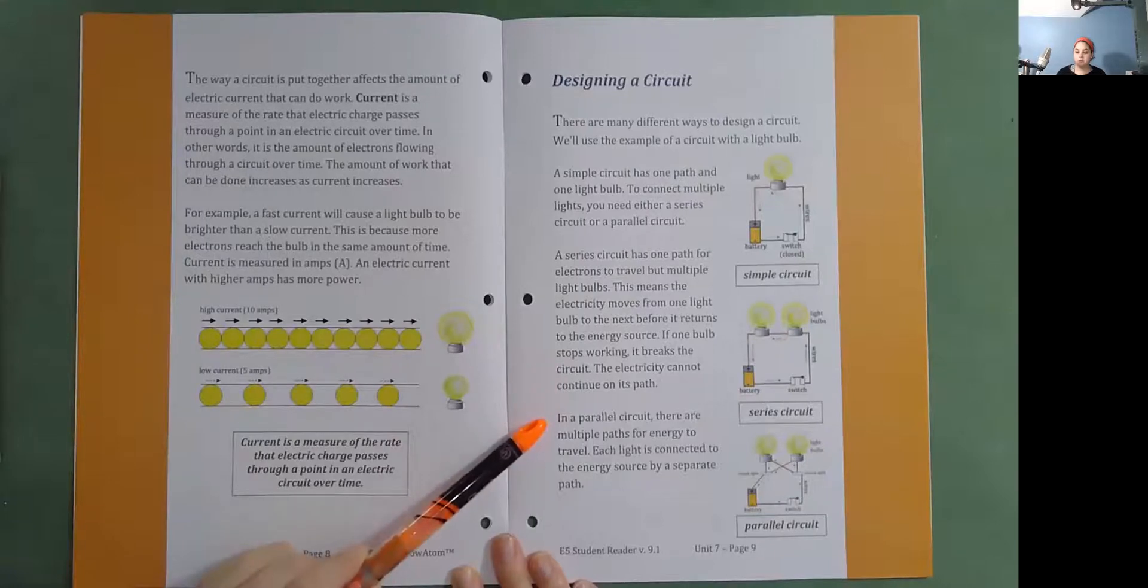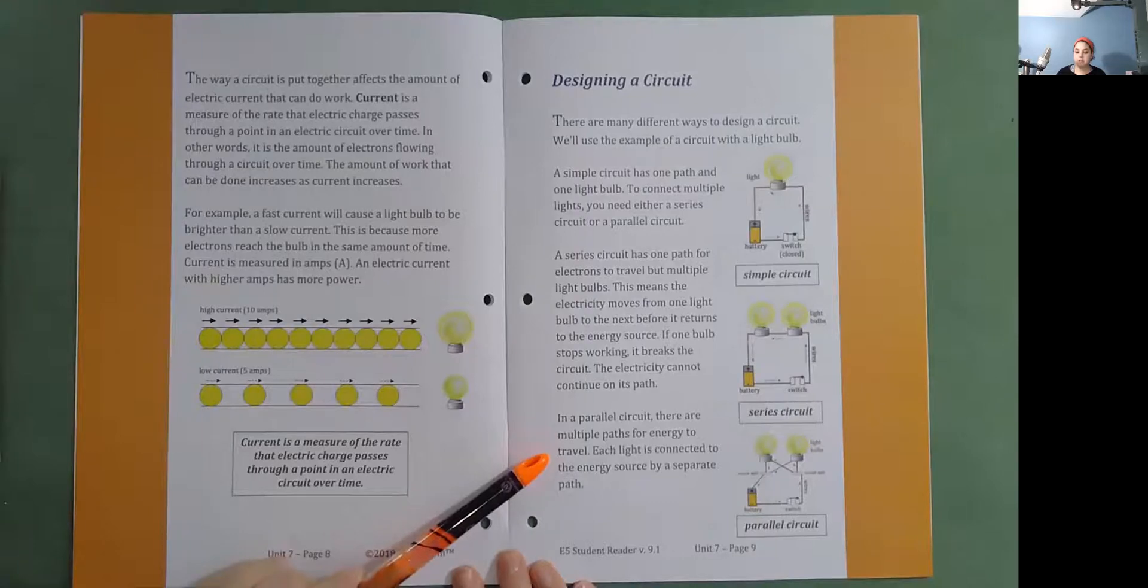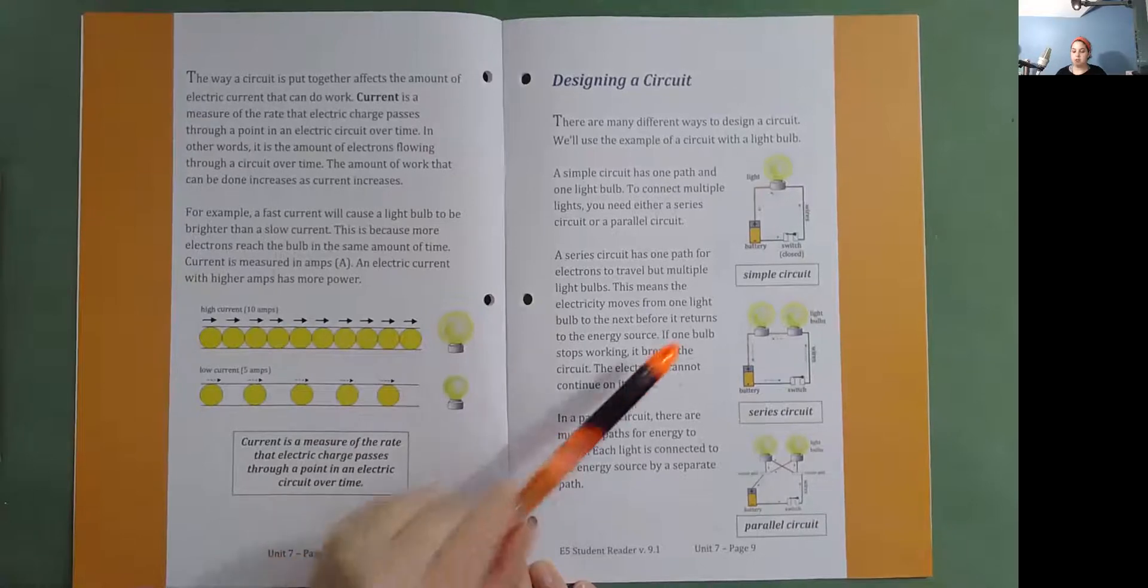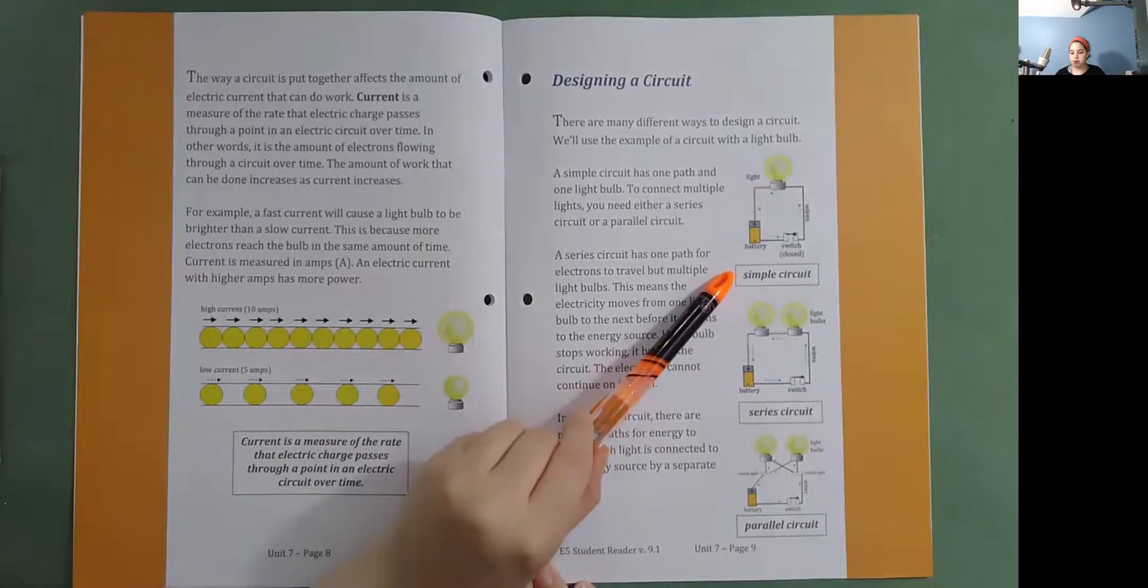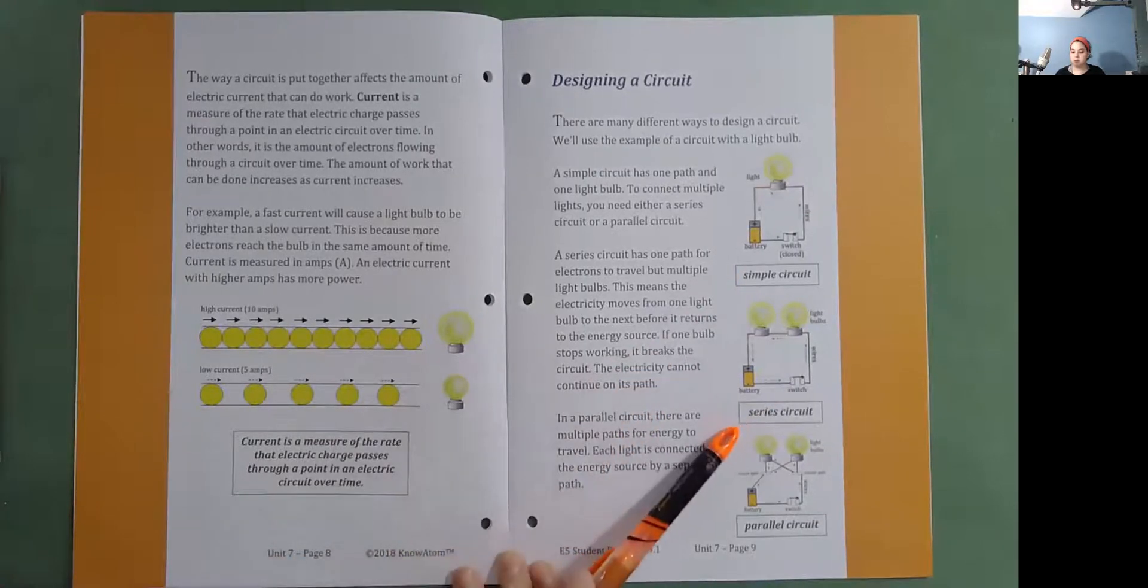In a parallel circuit, there are multiple paths for energy to travel. Each light is connected to the energy source by a separate path. Here's an example of a simple circuit, a series circuit, and a parallel circuit.